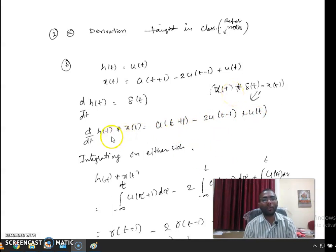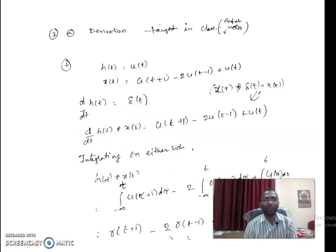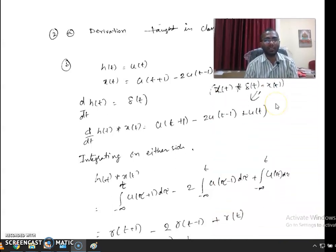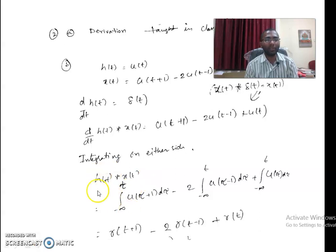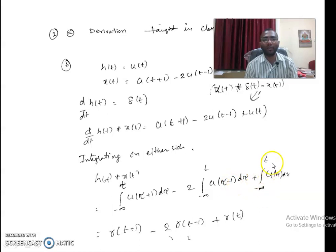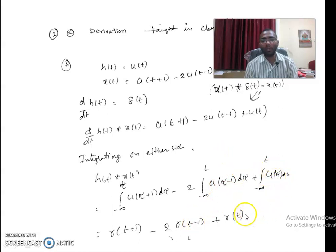To recover x(t) * h(t), we integrate. This gives: ∫₋∞ᵗ u(τ+1)dτ - 2∫₋∞ᵗ u(τ-1)dτ + ∫₋∞ᵗ u(τ)dτ. Integrating step functions yields ramp functions: r(t+1) - 2r(t-1) + r(t), where r(t) is the ramp function shifted accordingly.